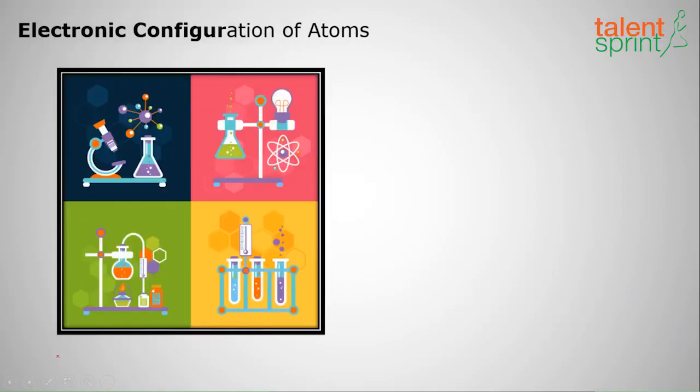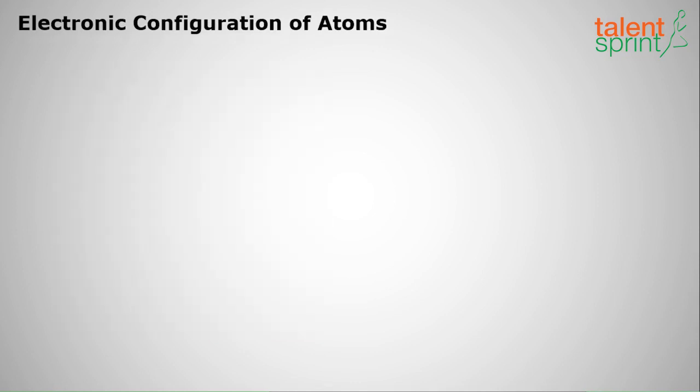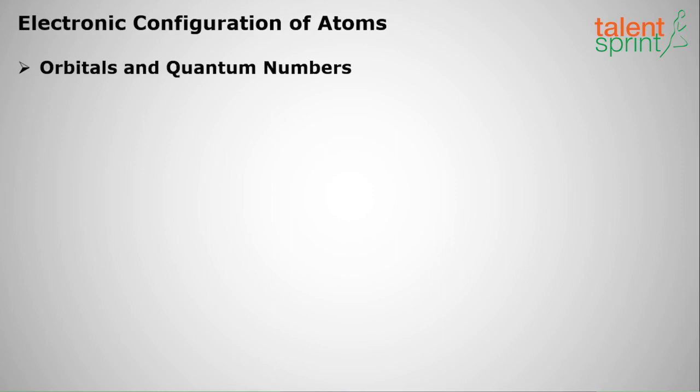Hello everyone, welcome to Talent Sprint. In this session of chemistry we shall discuss the electronic configuration of atoms. We have seen atomic structure and introduction to chemistry in the previous topics, so now we shall see how to configure an atom. First we shall know about the orbitals and various quantum numbers.